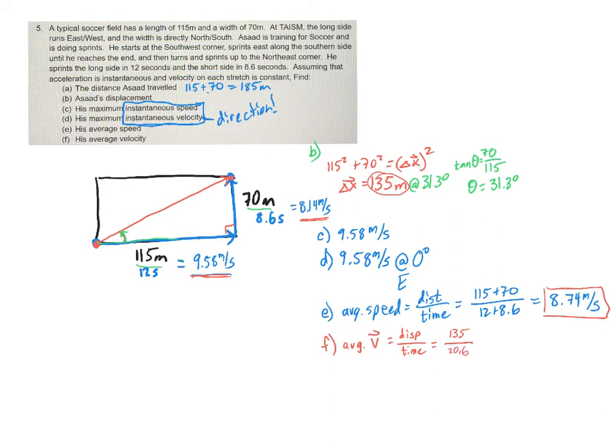So 20.6. And if we do that, we go 135 divided by 20.6. We get a value of 6.55. All right? Now, that 6.55 has a direction. The direction of your velocity is going to be the same direction as your displacement there.